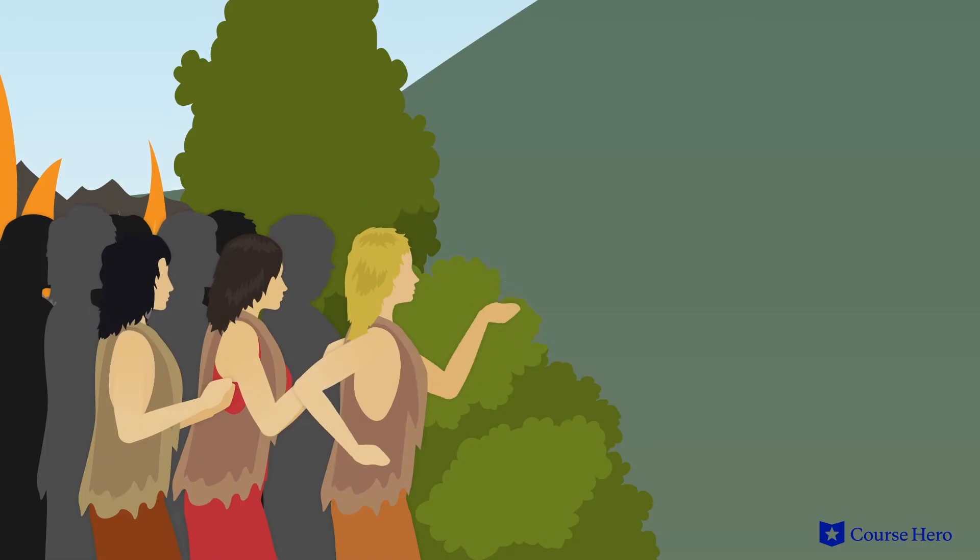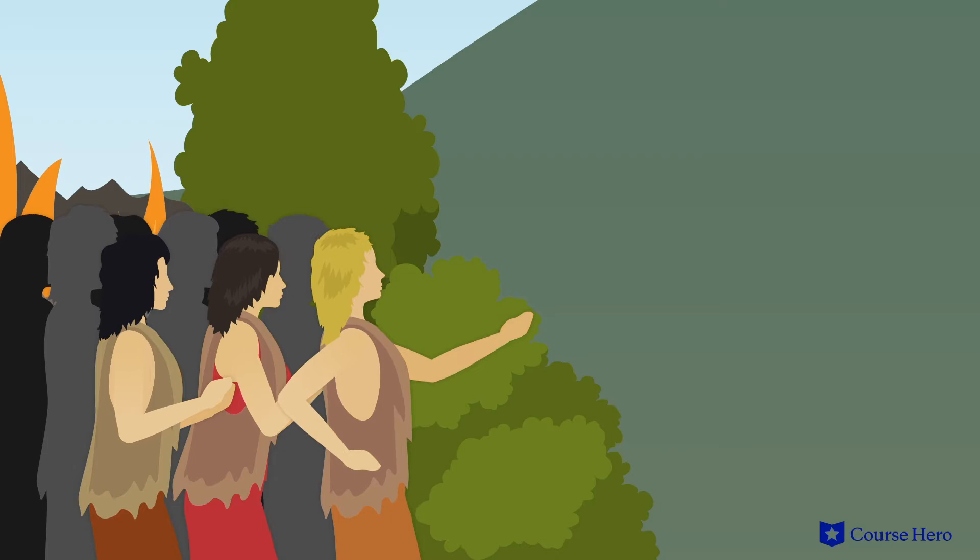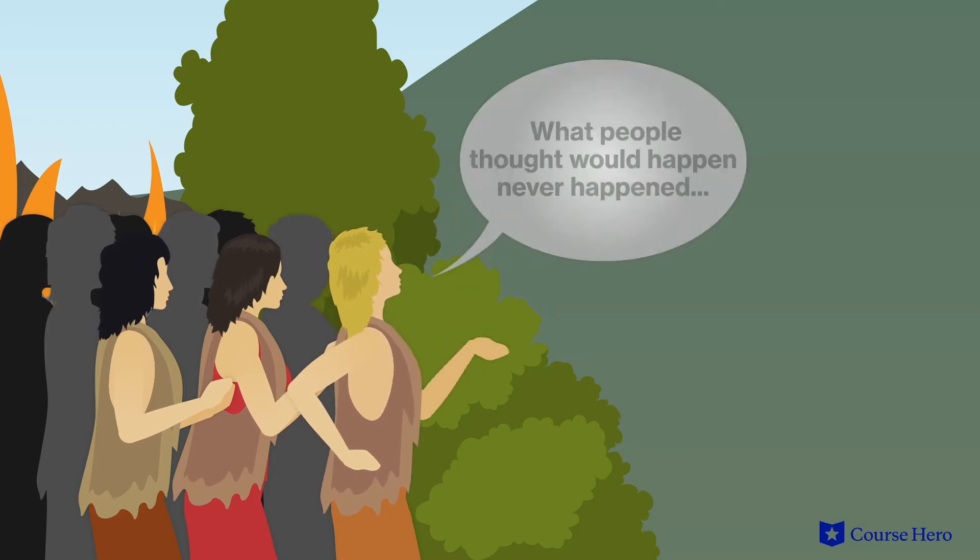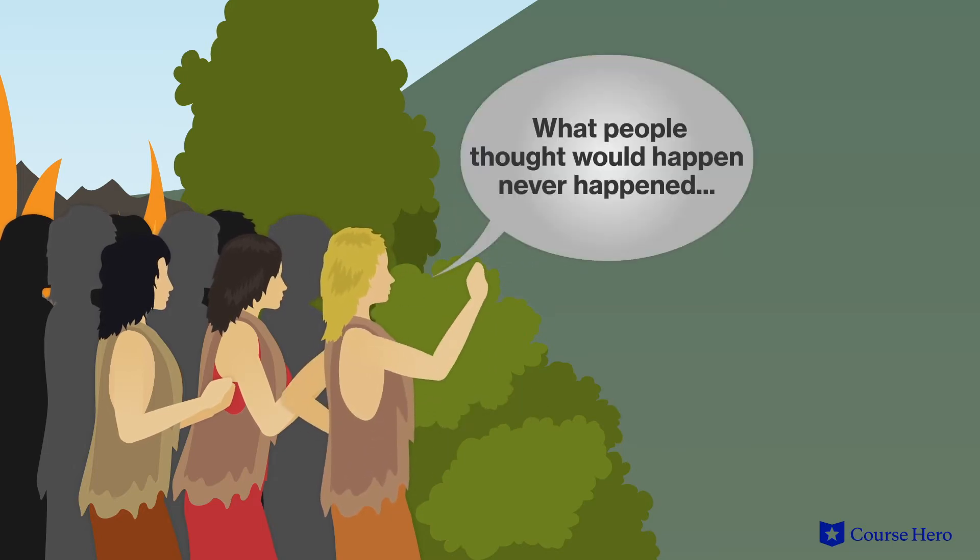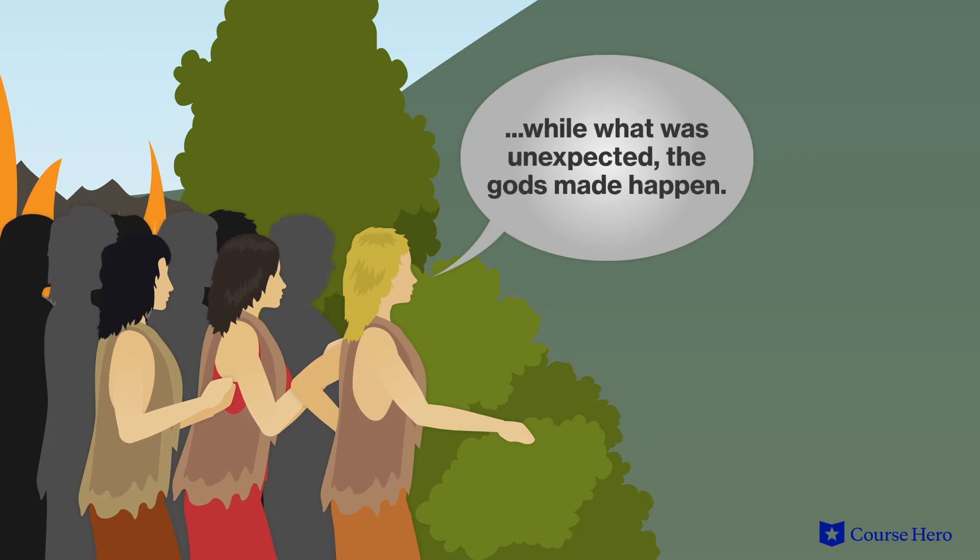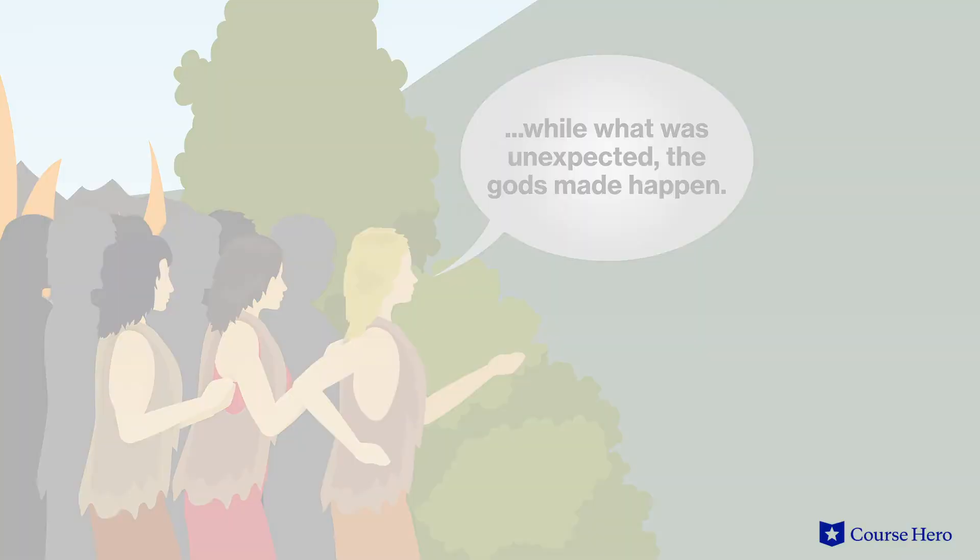The Exodus is the final act of the Bacchae. The chorus sings one final song about the power of the gods, singing what people thought would happen never in fact happened, while what was unexpected the gods made happen. It then exits without offering any further insight on these events.